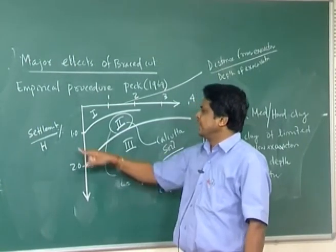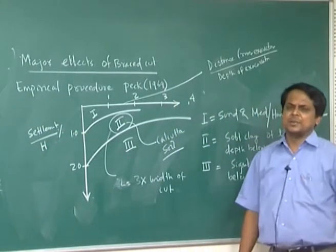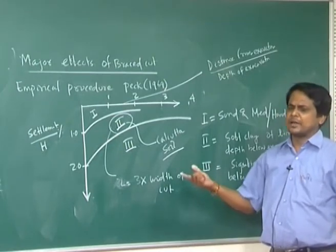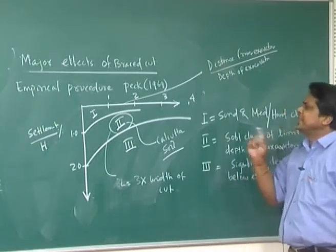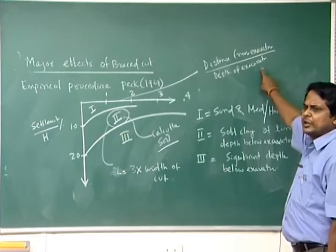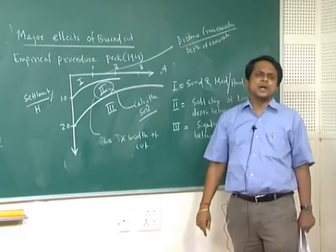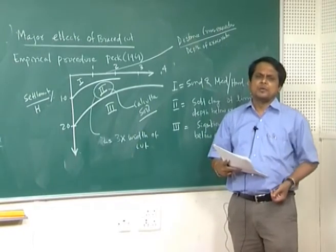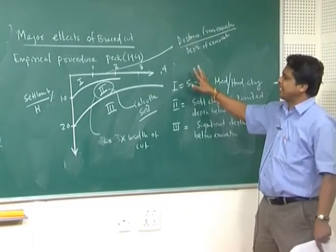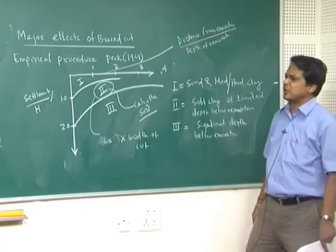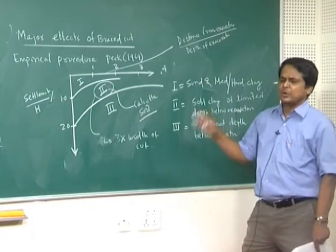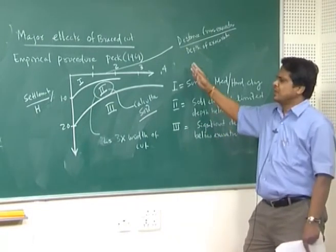With these empirical procedures, there are two parameters you can find out: one is the zone of influence, and the other is the maximum settlement or maximum ground movement within that zone of influence. This is one of the design parameters you must determine before starting, because it influences ground displacement, zone of ground movement, and maximum settlement. It will also affect the total pressure distribution diagram, and this has to be found out from the beginning.